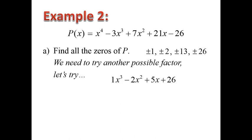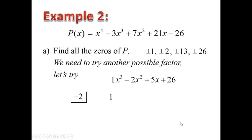From the cubic polynomial, we want to try synthetic division one more time. Once we reduce down to a quadratic, we can use the quadratic formula or factor to find the remaining zeros. From here, we try negative 2. Writing down all the coefficients: 1, negative 2, 5, and 26.